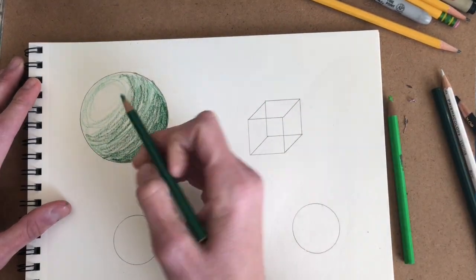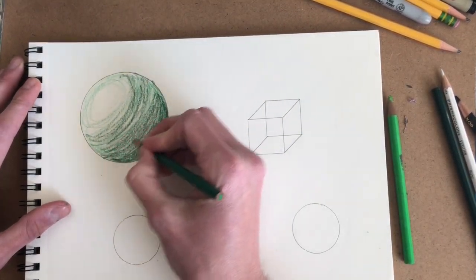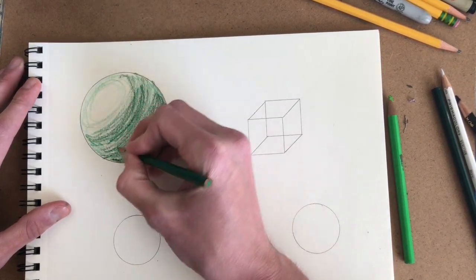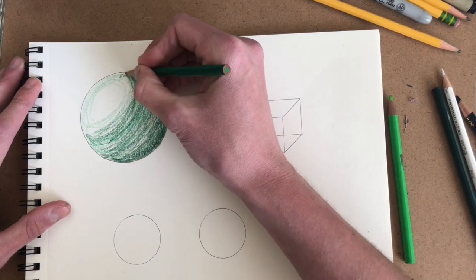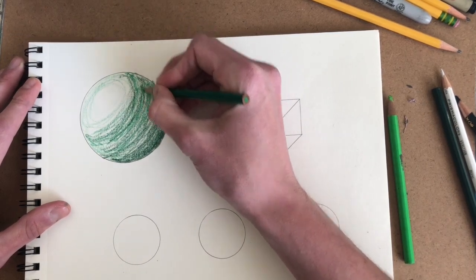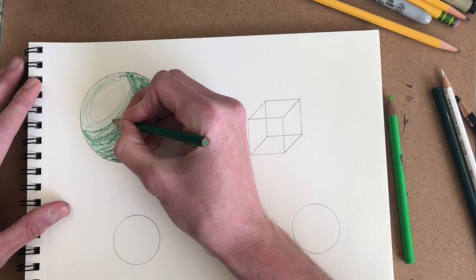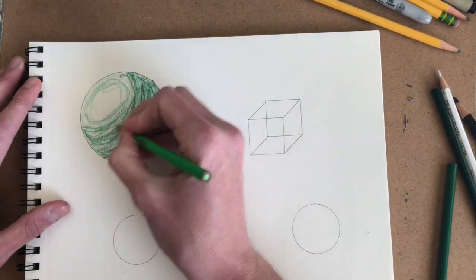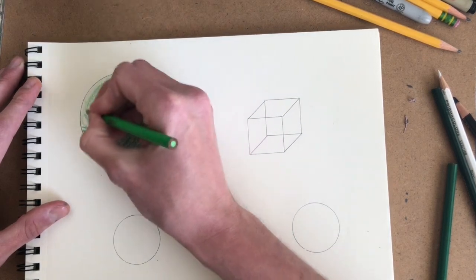I'll start pressing a little harder toward here to make this darker area darker. Go back over with my medium green the main areas, and then switching to my lighter green as I get to the lightest area.